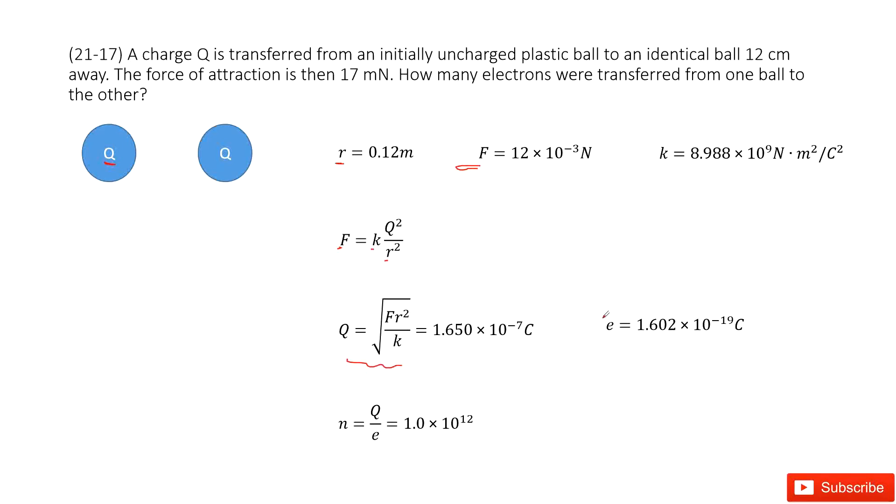And also we know the charge for one electron as the e. And then what's the number of electrons. So we use the total charge divided by the charge for one electron. Get the answer here. Thank you.